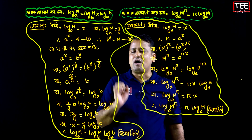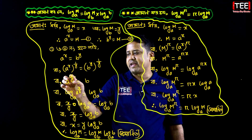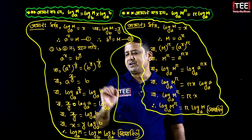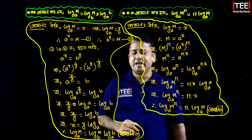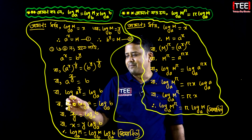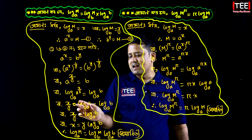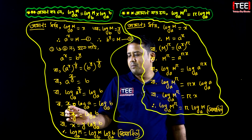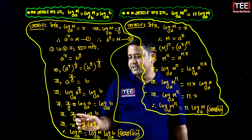So x is equal to y into log base a of b. If y is equal to y into log base a of b, then we will have the power of y into log base a of b confirmed.